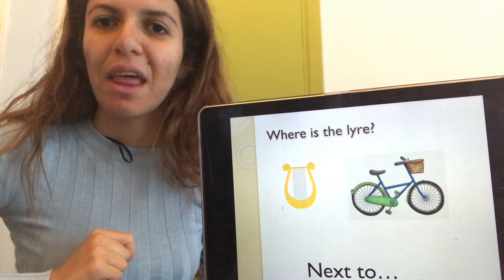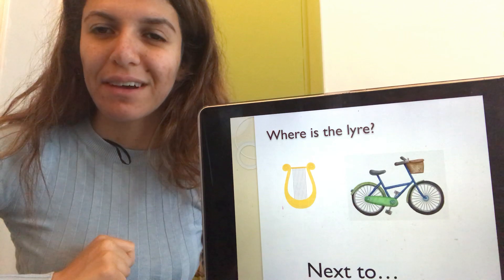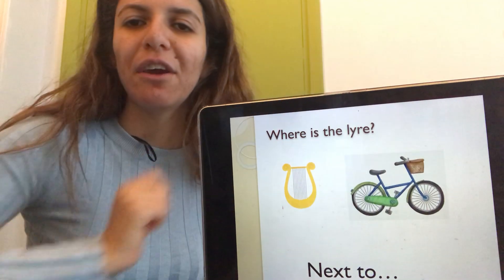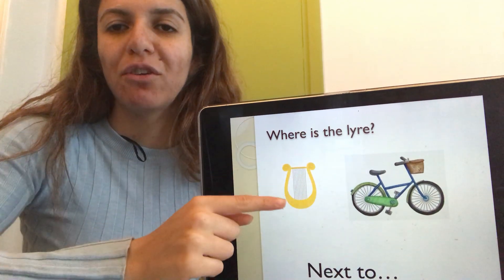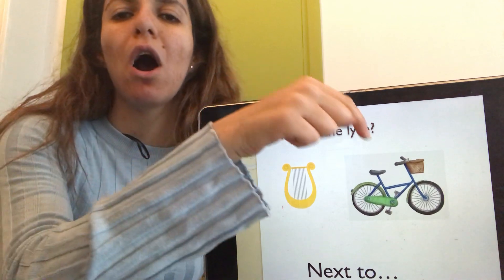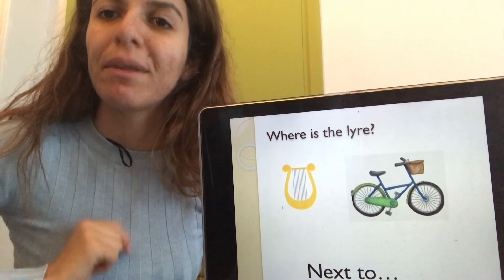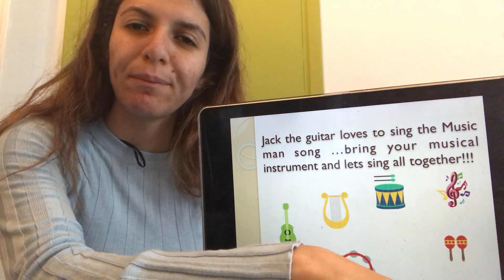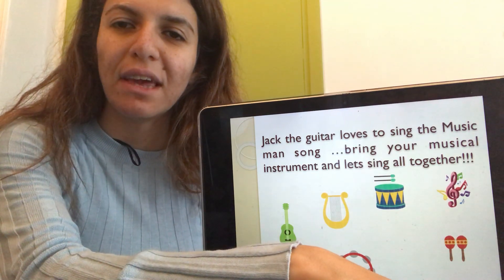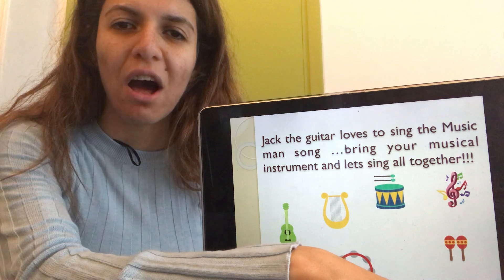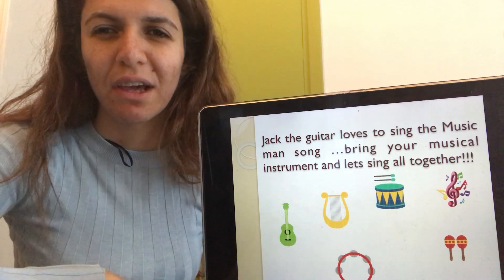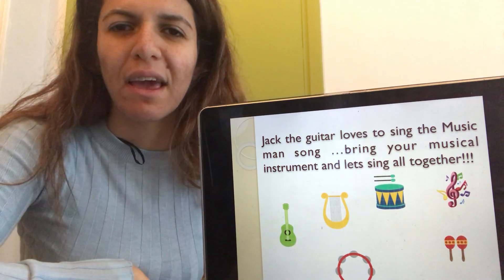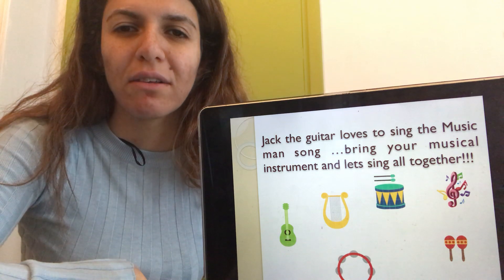What's that? A bicycle. Where is the lyre? Is it next to the bicycle or on the bicycle? Next to the bicycle. Very good. Let's see. Jack the guitar loves to play his music. Let's sing our music man's song together.